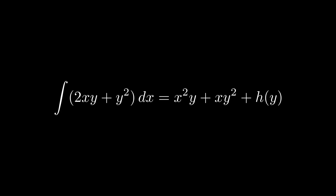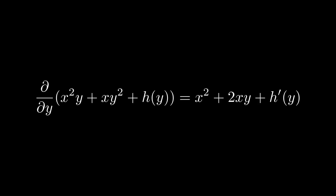For the solution process, we integrate M first with respect to x, and get x²y + xy² + h(y). Remember, since we're integrating with respect to x, y is treated as a constant, so we include h(y) as our arbitrary function.